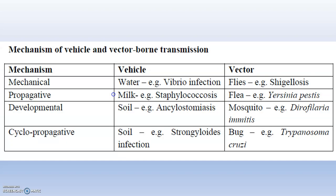The mechanism of vehicle and vector-bound transmission: mechanical vehicle is water — example, Vibrio infection. Vector via flies causes shigellosis. Propagative: staphylococcus via vehicle; flea transmits Yersinia pestis. Developmental: soil causes angiostomiasis (a nematode); mosquito transmits Dirofilaria (also a nematode). Cyclopropagative: soil causes Strongyloides infection; reduviid bug transmits Trypanosoma cruzi.